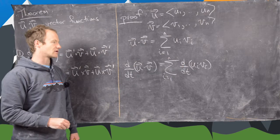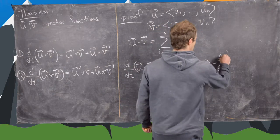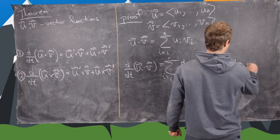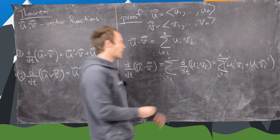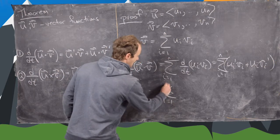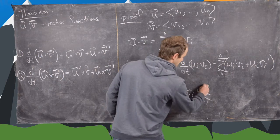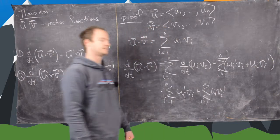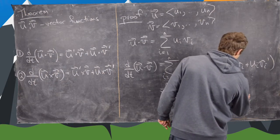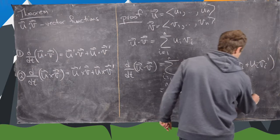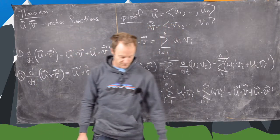Notice those are scalar functions, so we can use the normal product rule, and that gives us the sum from i equals one to n of ui prime vi plus ui vi prime. We can separate this into two sums: the sum from i equals one to n of ui prime vi, plus the sum from i equals one to n of ui vi prime. Those are easily recognizable as dot products — the first is u prime dot v and the second is u dot v prime. So we've established this first identity.